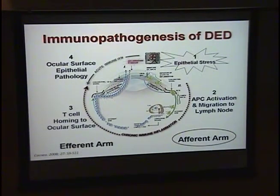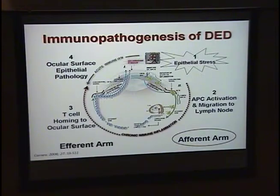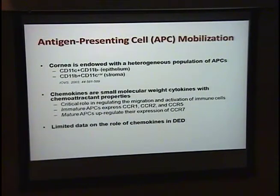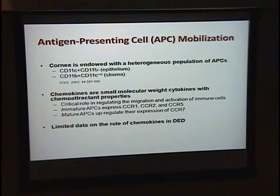We've been looking at the afferent arm of this immune response, looking at APC recruitment to the ocular surface and the dynamics of homing to regional lymph nodes. The cornea contains several different populations of antigen-presenting cells: the CD11C population, which are dendritic cells within the epithelium, and the CD11B population — where CD11B is a macrophage marker — existing within the stroma. We've been studying the CD11B population of the stroma.